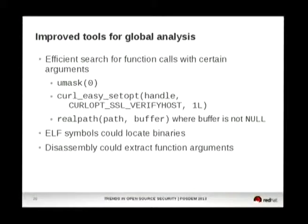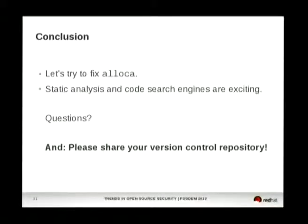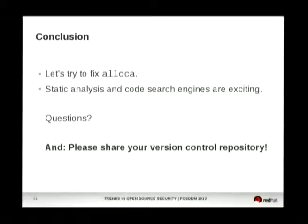The last point is about PATH_MAX bugs, because PATH_MAX actually isn't a hard limit on Linux. We could use the ELF symbol database index to locate interesting points, then use disassembly to extract function arguments and find all such calls reliably. The two things to take home: we should try to fix alloca this year, and static analysis and code search engines are exciting. Please share your version control repositories so we can use them to prepare security updates.